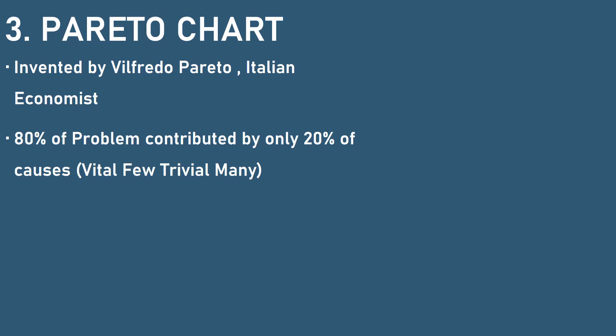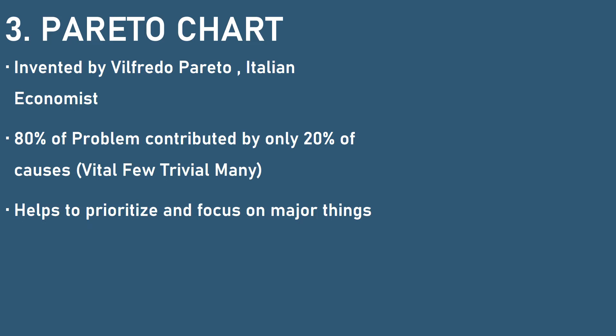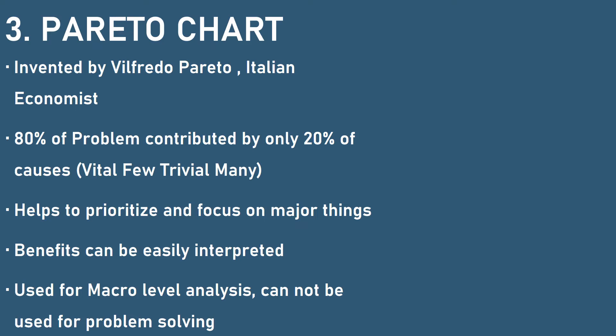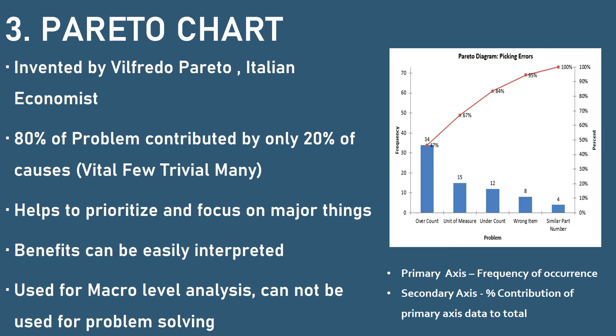So 20% of causes contribute 80% of your problems. You have to prioritize and focus on the major things using this tool, and benefits can be easily interpreted. The only drawback is that it helps for macro-level analysis — you cannot solve a single problem using this tool alone. It helps to prioritize your overall problems. In the example shown here, only three problems are contributing 84% of overall problems, so you can focus on just the first three problems to address on priority.